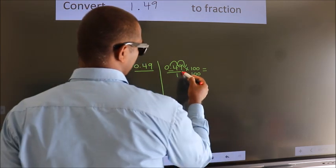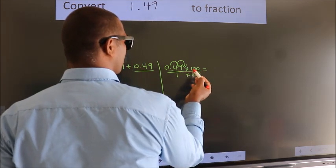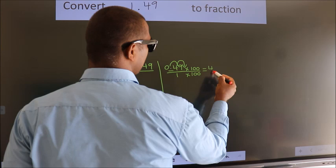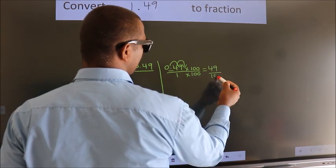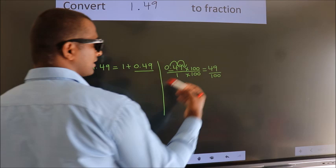Next, 0.49 into 100 is 49. 1 into 100 is 100. This is the fraction we got.